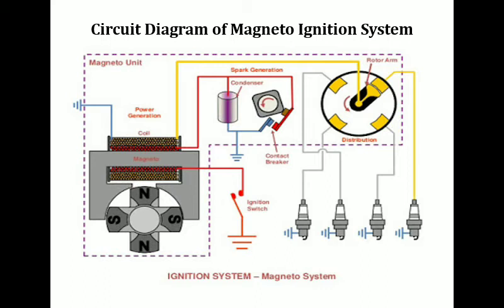Similarly, in the magneto ignition system, there is a primary winding and a secondary winding. The current flows from the primary winding to the condenser, which is the capacitor. There is also a contact breaker point, which is used to make or break the circuit and is operated by the cam. The condenser here means the capacitor. There is also an ignition switch used. Four spark plugs are used, so this type of magneto ignition system is used in a four-cylinder engine. There is also a distributor, the rotating component, which is used.